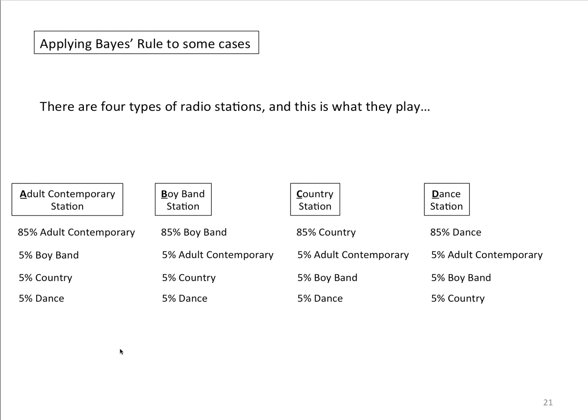Recall the previous example with Dr. Evil. We had a likelihood table of symptoms you would see given that you have certain diseases. This table here is analogous to that likelihood table. In this case, it's the probability of certain kinds of songs being played given that you've got a certain type of station.